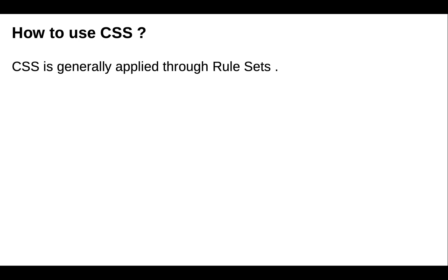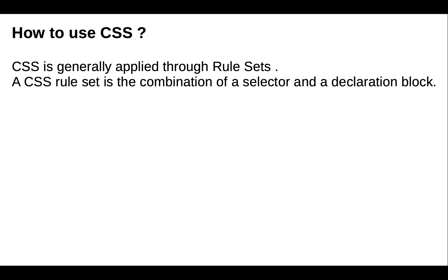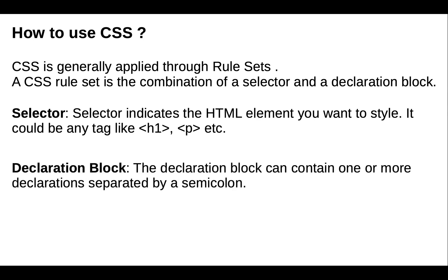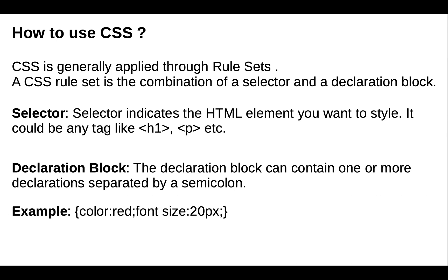CSS is generally applied through rule sets. A rule set is a combination of a selector and a declaration block. The selector indicates the HTML elements you want to style — it could be any tag like h1, h2, h3, or p tag. The declaration block can contain one or more declarations separated by a semicolon, for example color red and font-size 20.